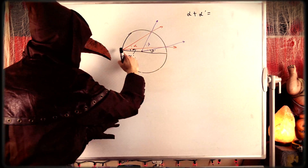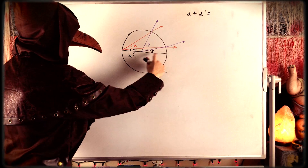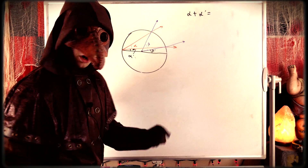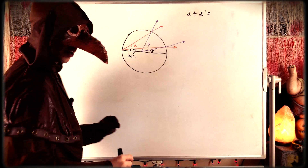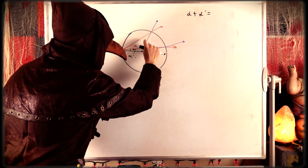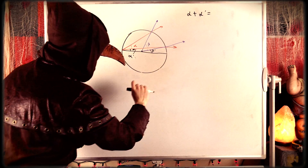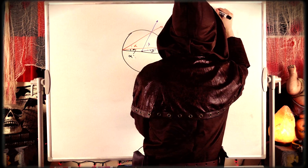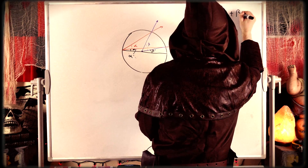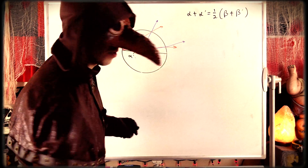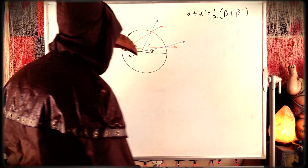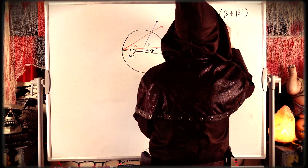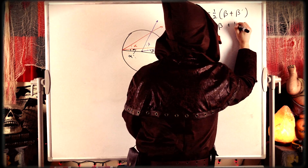We can apply case 1 for inscribed angles that pass through the diameter or center of the circle. Beta plus beta prime is a central angle cutting the same arc as alpha plus alpha prime, so we know that alpha plus alpha prime equals one half of (beta plus beta prime). Distributing the one half gives alpha plus alpha prime equals one half beta plus one half beta prime.